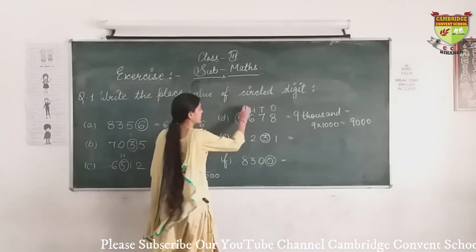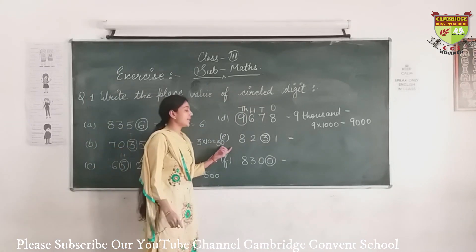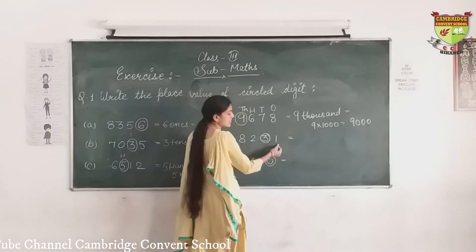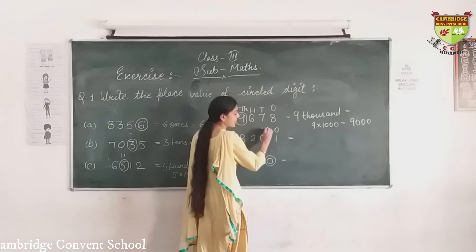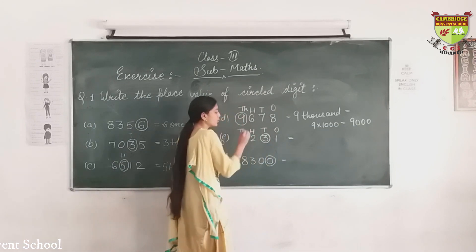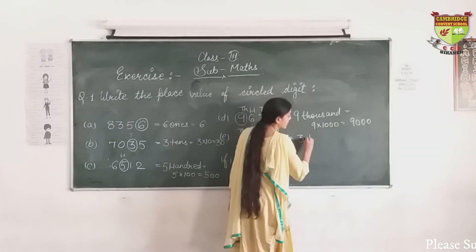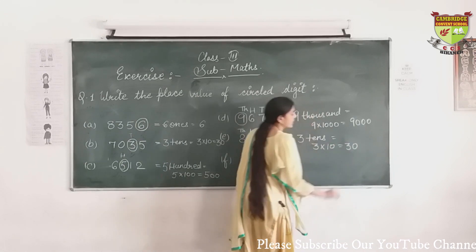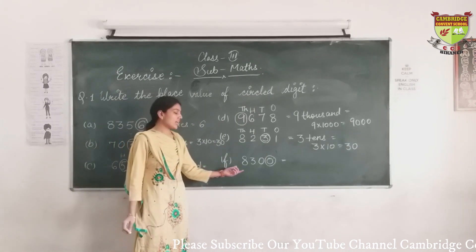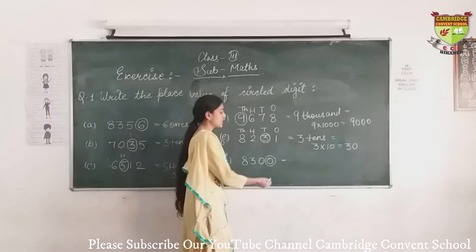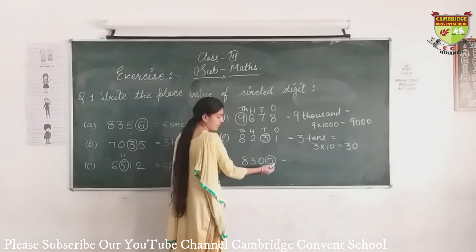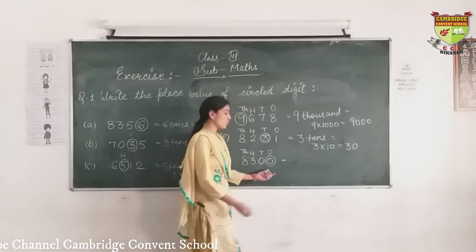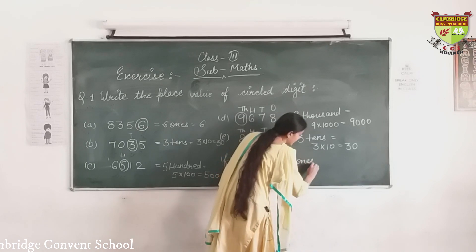Next number is 8,231. Starting from the extreme right: 1 is in 1's, 3 is in 10's, 2 is in 100's, 8 is in 1000's. The circled digit is 3, which is in 10's place, so 3 × 10 = 30. Next, 8,300: starting from the right, 0 is in 1's, 0 is in 10's, 3 is in 100's, 8 is in 1000's. The circled digit 0 is in 1's place, so 0 × 1 = 0.